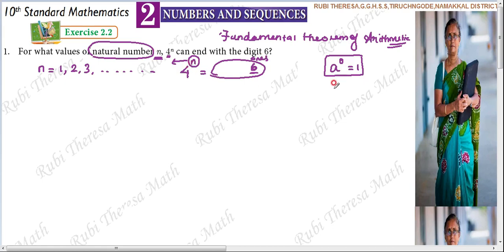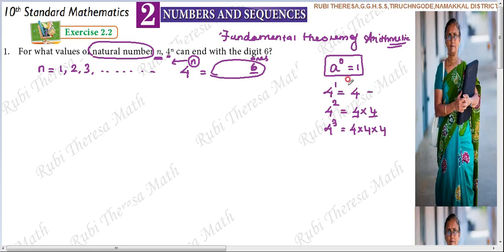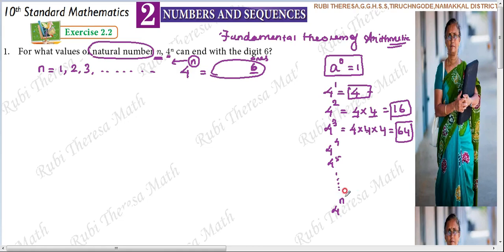So 4 power 1 means 4 multiplied 1 time, that is 4. 4 power 2 means 4 multiplied 2 times, which is 16. 4 power 3 means 4 is multiplied 3 times, giving 64. And so on up to 4 to the power N.